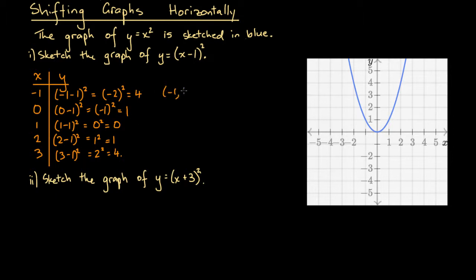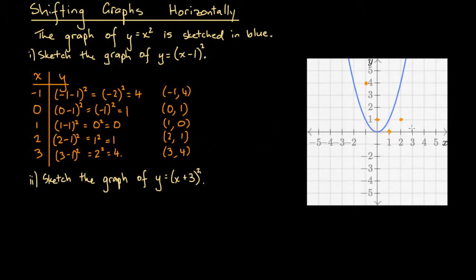Our coordinate points are: (minus 1, 4), (0, 1), (1, 0), (2, 1), and (3, 4). Let's go ahead and plot these. Minus 1 and 4 is 1 unit left and 4 units up. (0, 1) is 1 unit up at the origin. (1, 0) is 1 unit right. (2, 1) is 2 units right and 1 unit up. (3, 4) is 3 units right and 4 units up. It looks like this will take a similar parabolic shape to the blue curve, just shifted over a little.